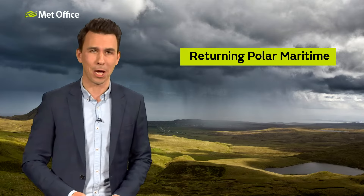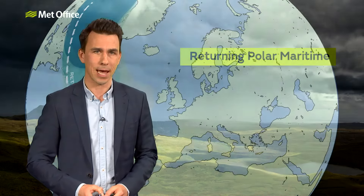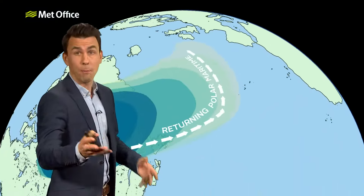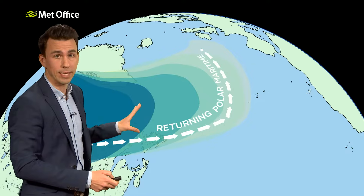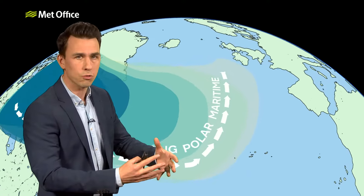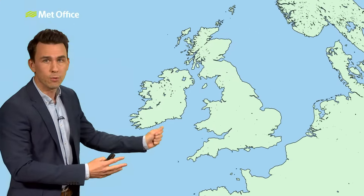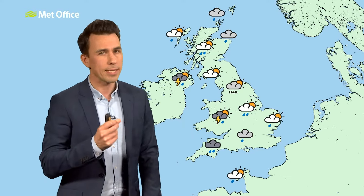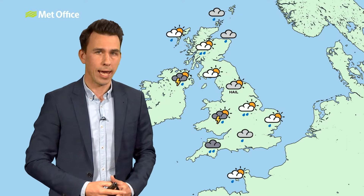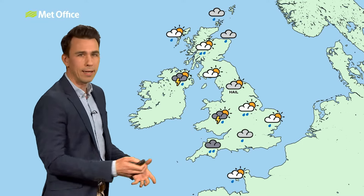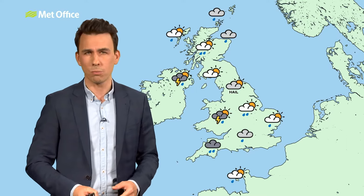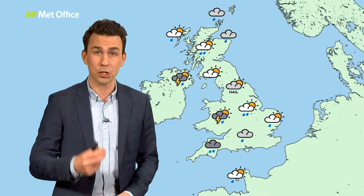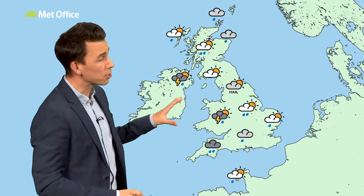Returning polar maritime. The returning polar maritime air mass can bring us all sorts of weather. Like the polar maritime air mass, this also starts in Greenland or Arctic Canada, a very cold source region. Warmed from below by the much warmer Atlantic, it becomes unstable with lots of heavy showers. But this one spends longer over the Atlantic and can move up again from the south, arriving in the UK on a southwesterly wind. It will become milder and pick up more cloud and rain. So a returning polar maritime air mass will bring a lot of cloud, as well as showers or longer spells of rain, especially to western areas.